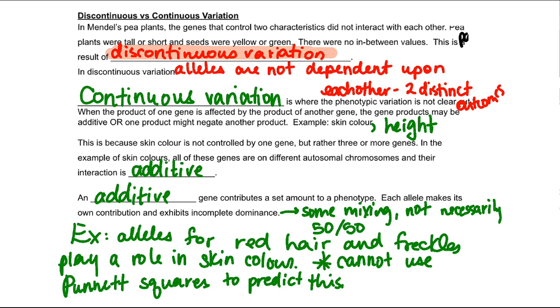It really is due to that continuous variation, those multiple genes having an additive effect. And that additive gene contributes to a set amount of phenotypes, so each allele makes its own contribution and exhibits incomplete dominance. I know it's a bit of a tricky concept to understand. Again, this is not for me to explain it in more detail, it's just to go over the main ideas that are important.